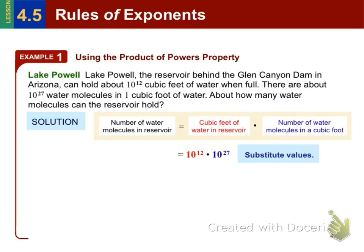We're going to substitute in the values. And since there are 10 to the 12th cubic feet of water when full, we can multiply that to the amount of water molecules in one cubic foot. Since the bases are the same, we can apply the property and add the exponents and get 10 to the 39th power. So that's a 1 with 39 zeros after it. That's quite a lot.